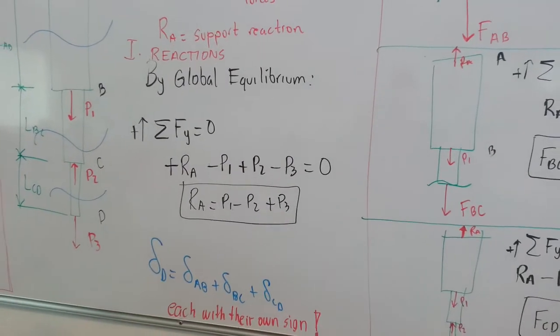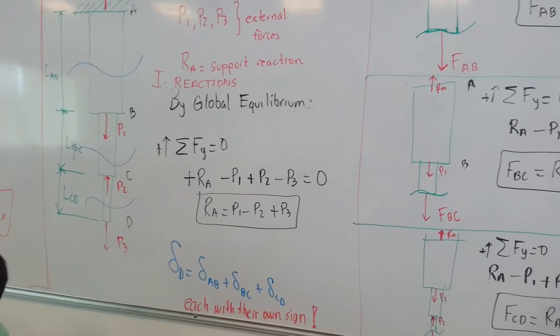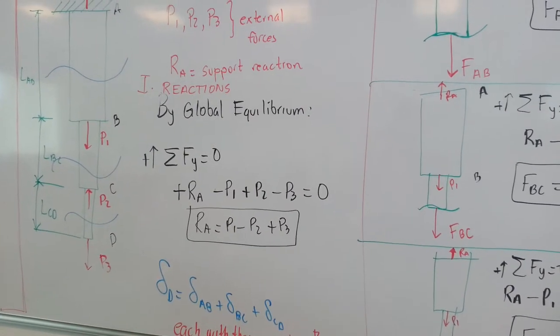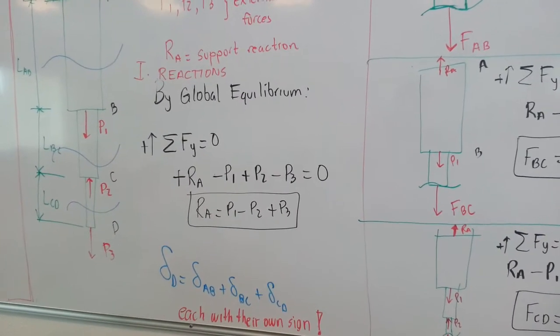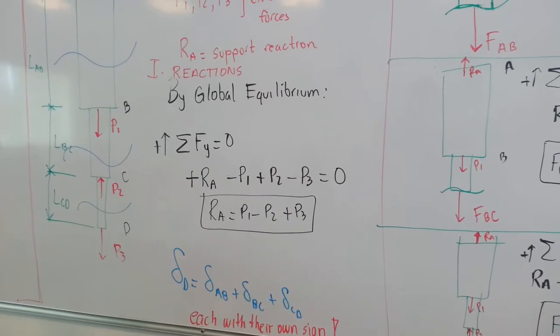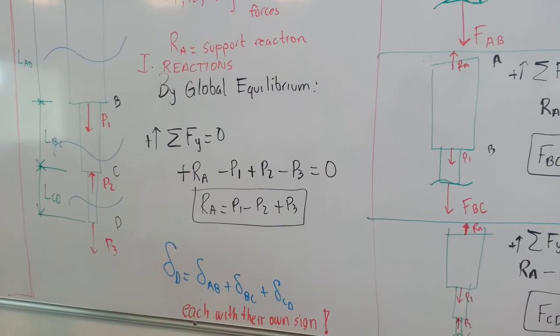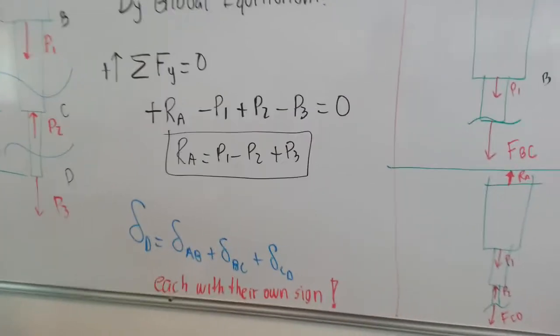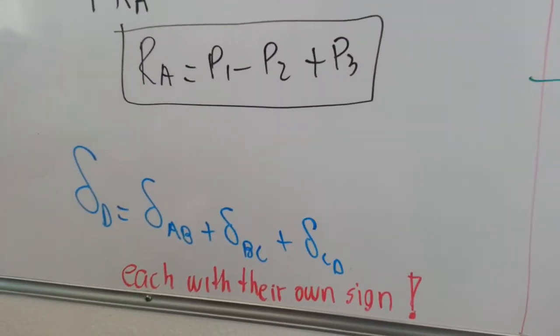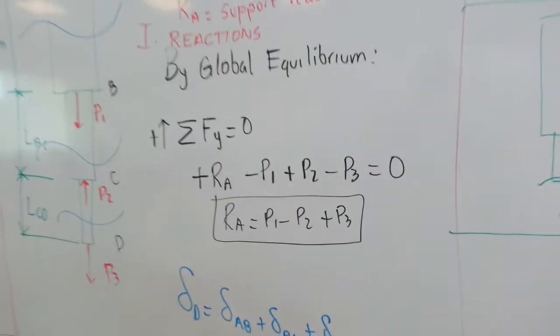And in order to calculate the total deformation at the end D of the bar, you have to calculate the deformation of each segment. Each deformation will come into this equation with their own sign. So pay attention to the sign of each deformation.